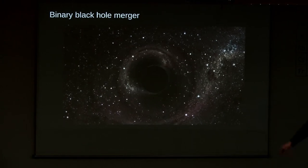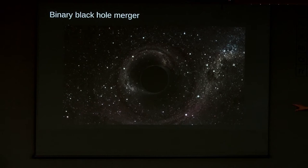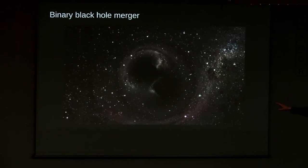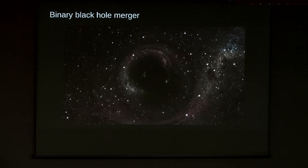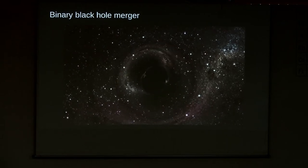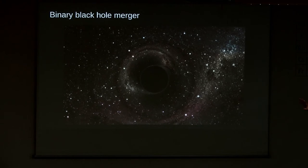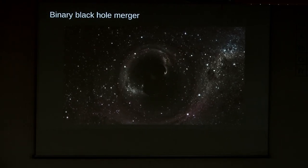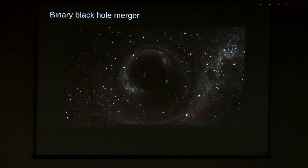This process starts when the black holes are very close to each other. By very close, I mean for stellar mass black holes about 0.1 astronomical units. This process kicks off when two black holes are at approximately the distance between the Sun and Venus, extremely close to each other.